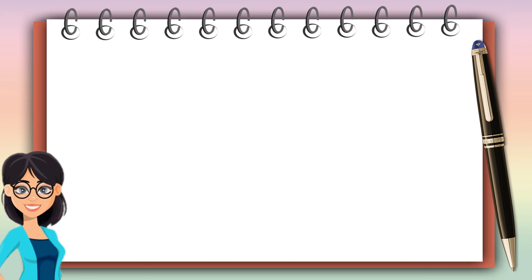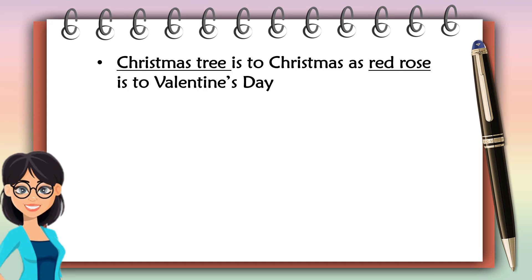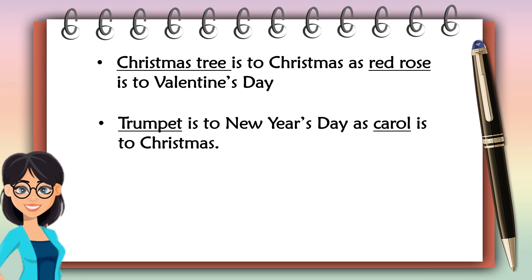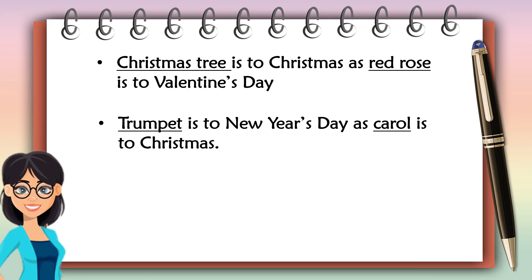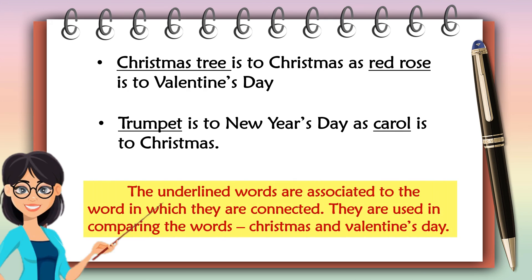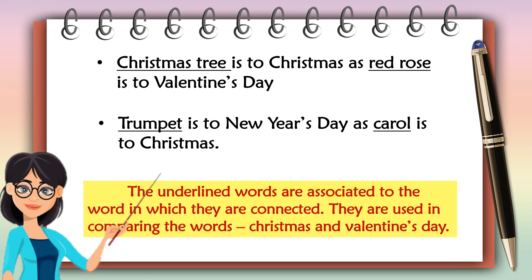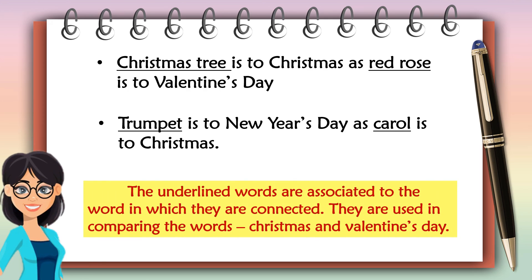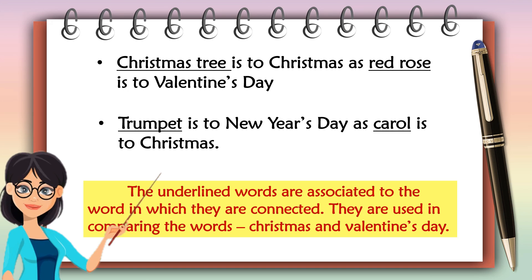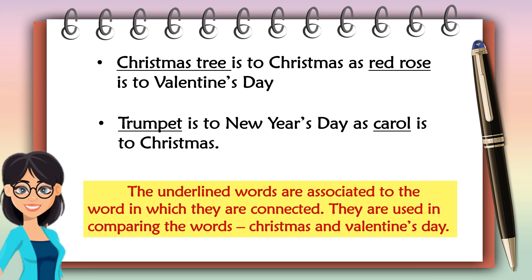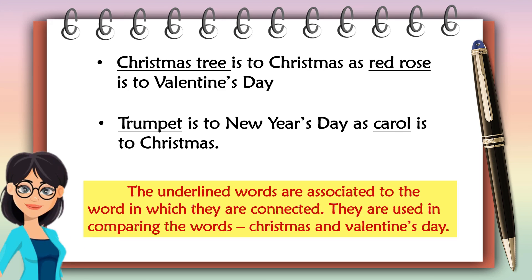How are the words related to each other? Let's say: Christmas tree is to Christmas as a red rose is to Valentine's Day. The underlined words are associated with the word they are connected to. They are used in comparing the words Christmas and Valentine's Day.